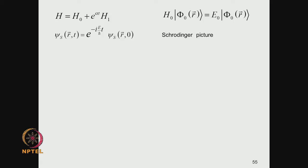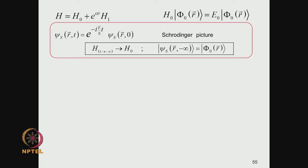In the Schrödinger picture, we introduced the difficult term — what I have been calling the unfriendly term — which makes the problem so cumbersome: H1. You have the exact solution for H0, the unperturbed Hamiltonian, which is solvable and known to us. But we do not have the solution when we include the correlations, which are sitting in H1.